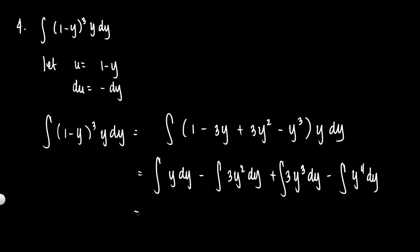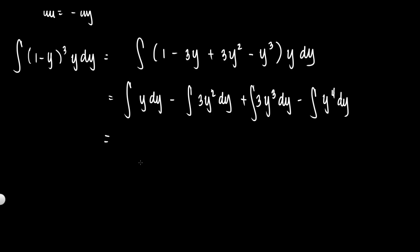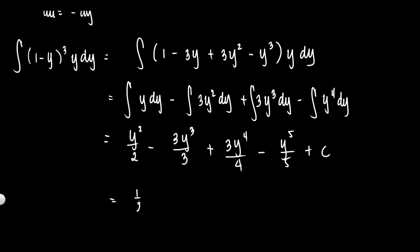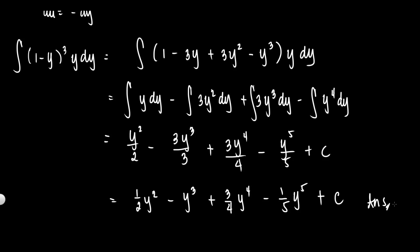Applying the power formula term by term: y²/2 - 3y³/3 + 3y⁴/4 - y⁵/5 + C. Simplified, this equals (1/2)y² - y³ + (3/4)y⁴ - (1/5)y⁵ + C. That is your final answer. When the power formula is not applicable, you most likely need to expand — you can use Pascal's triangle.